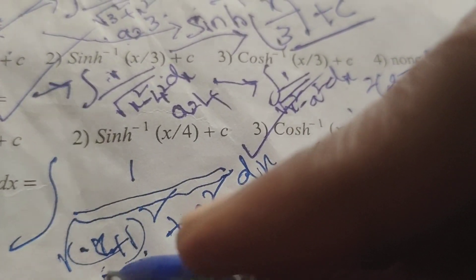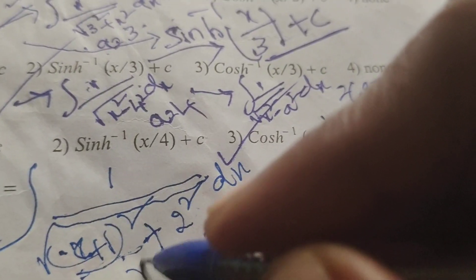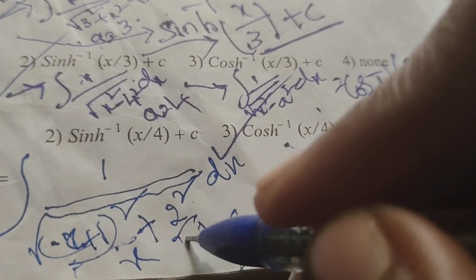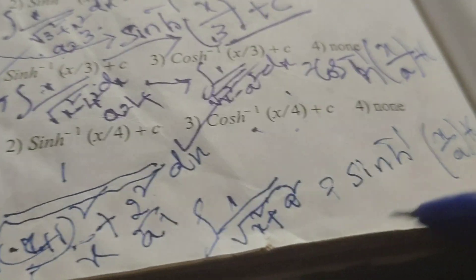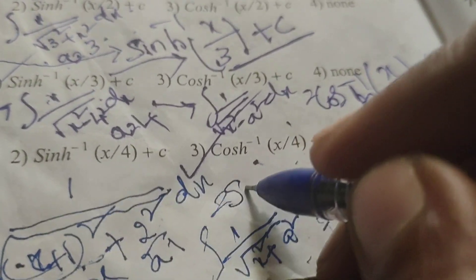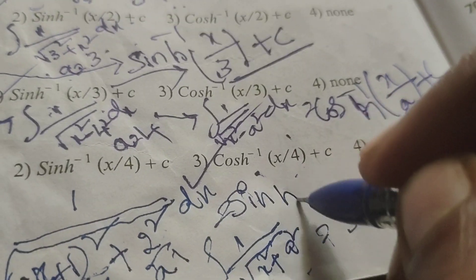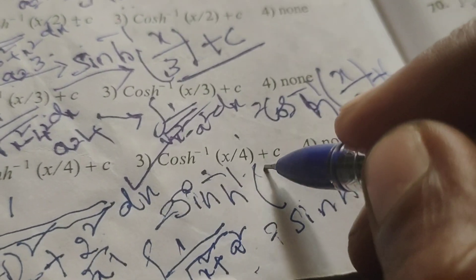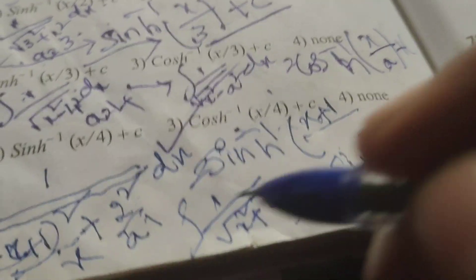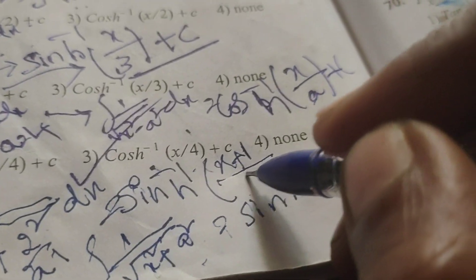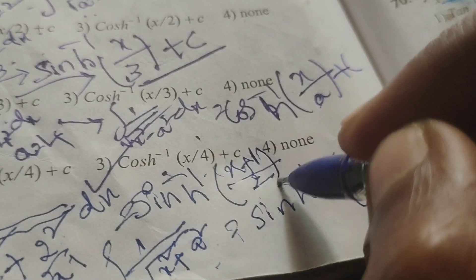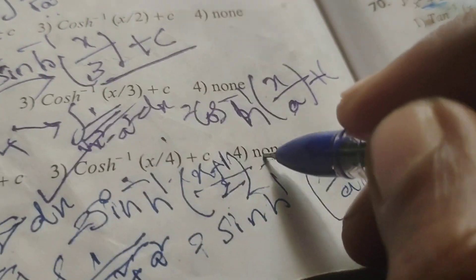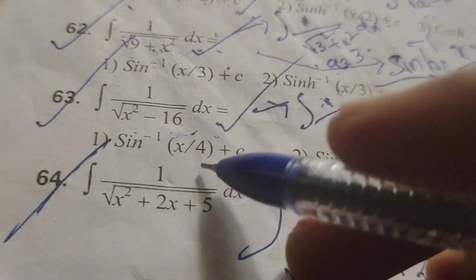But here, for x means x plus 1 and a means 2. So write this formulae: sinh inverse of x by a. What is x plus 1 by 2 plus c is the solution in this evaluated integral problem. Thank you.